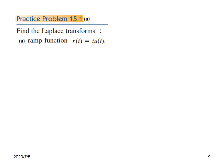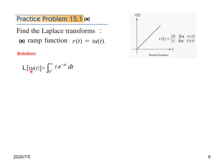Finally we will do the practice problem, part 1 only. It is a ramp function r(t) given by t times u(t). The ramp function is a straight line originating from 0, with value 0 for t less than 0 and value t for t greater than 0 — a straight line with slope 1. So the Laplace of t times u(t) means we are considering the positive side, t greater than 0.